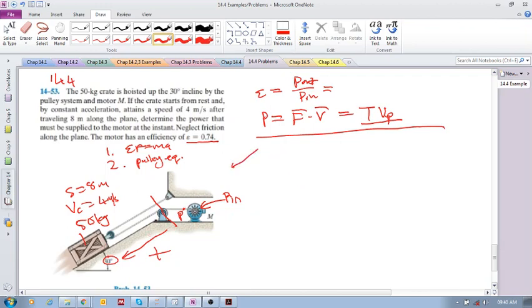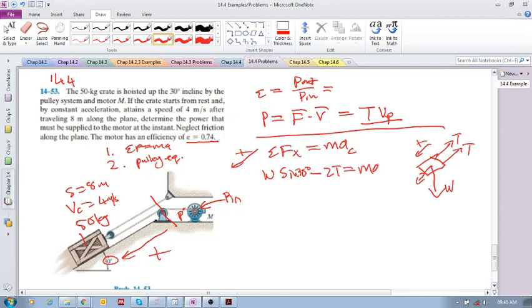Down is positive. Sum of the forces in the X is mass times acceleration of the crate. If that's the crate, what are all the forces acting on it? I've got weight acting down, and I've got 2 times T acting up, and we know that that's positive. So, we've got W sine 30, that component of W, that's W sine 30 minus 2T is mass times acceleration of C. In this X direction, the X component of weight is acting in the positive direction, and I've got minus 2T.